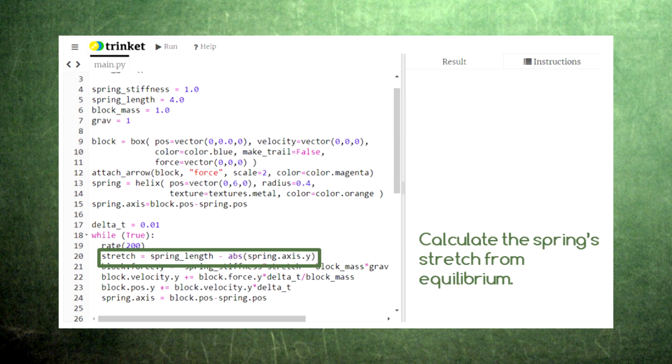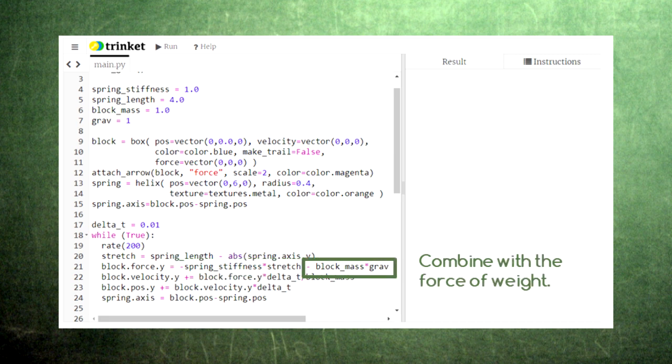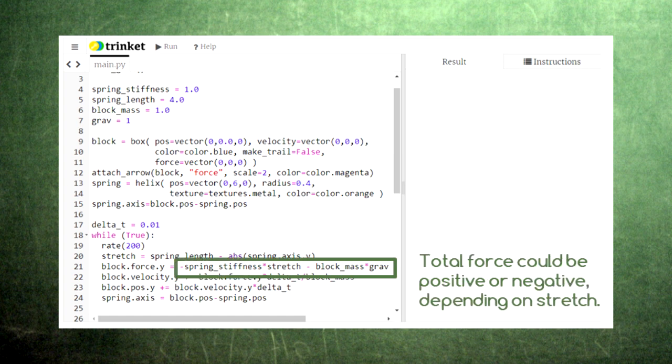This stretch is equal to the difference between the spring's natural length and the spring's current length. The force that the spring exerts is given by the equation we saw earlier: a negative sign times the spring stiffness times the stretch of the spring. We subtract from this spring force the constant force of gravity on the block. Sometimes these forces will point in the same direction, and sometimes they'll point in opposite directions.